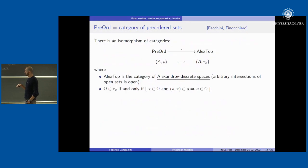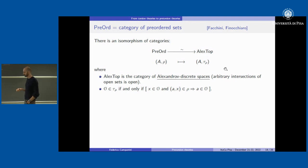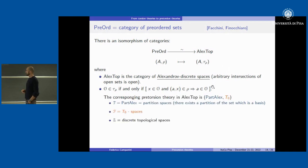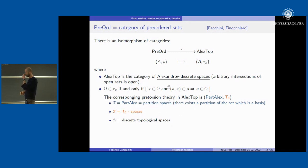A short exact sequence for any given preorder is: we take as a subobject the equivalence relation given by a ~ b iff a ≤ b and b ≤ a, and perform the quotient to define the antisymmetric preorder. There is a topological counterpart because the category of preordered sets is isomorphic to the category of Alexandrov-discrete topological spaces, where Alexandrov-discrete means arbitrary intersections of opens are open. The corresponding pretorsion theory is given by partition spaces as the torsion part and T₀-spaces as the torsion-free part.